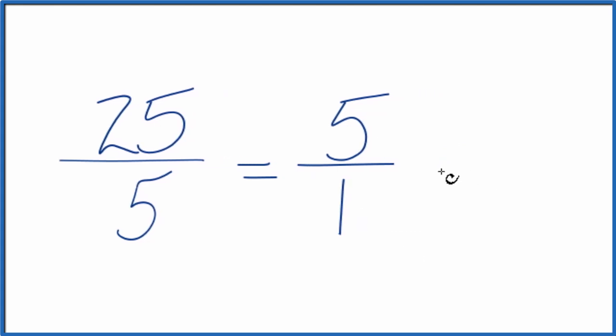And since 5 over 1 is still 5, we could divide 5 by 1. That gives us the whole number 5.